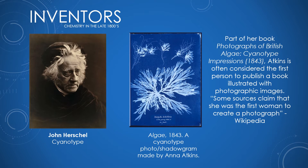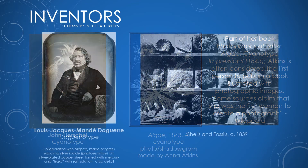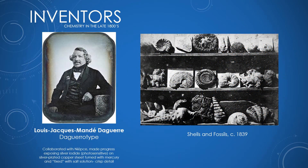Atkins's father was friends with William Henry Fox Talbot, so if you're wondering how a woman in that time period got access to these ideas and processes, it was through family connections. Louis-Jacques Mandé Daguerre was a French photographer credited with the invention of the daguerreotype, which was actually the first commercially successful photographic process — making photography accessible to the general public and a more commonplace practice.